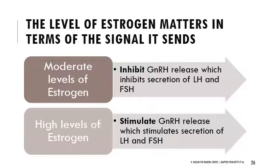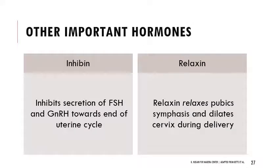When you have moderate or low levels of estrogen, it has an inhibitory effect — it inhibits GnRH release, which then inhibits secretion of LH and FSH. But when you have very high levels of estrogen, that actually stimulates gonadotropin-releasing hormone, which then stimulates secretion of LH and FSH. So low estrogen inhibits; high estrogen stimulates. Inhibin is also produced, which inhibits secretion of GnRH and FSH towards the end of the uterine cycle. And relaxin is involved in delivery — it relaxes the pubic symphysis and is involved in dilation of the cervix.